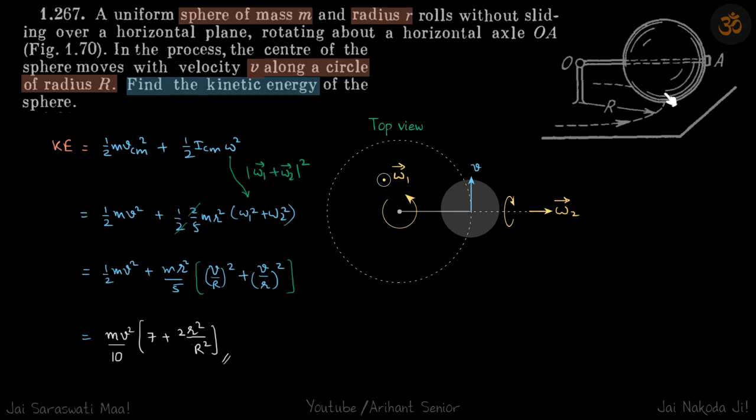We have this sphere that is rolling about its own axis and rotating about this axis as well, something similar to Earth and Sun. We need to find the kinetic energy of this sphere.